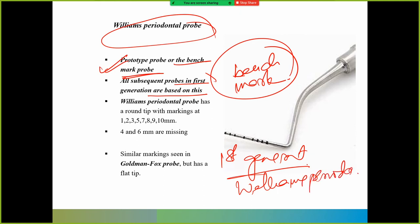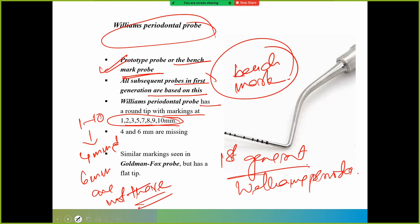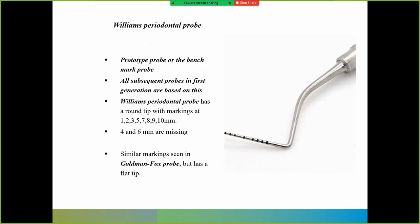Williams probe markings: Williams periodontal probe has a round tip with markings 1, 2, 3, 5, 7, 8, 9, 10. See, this is 1 to 10, but two things are missing: 4mm and 6mm are not there. So you remember this - this is important. MCQ can ask which markings are missing. So 4mm and 6mm are the missing points in Williams periodontal probe.